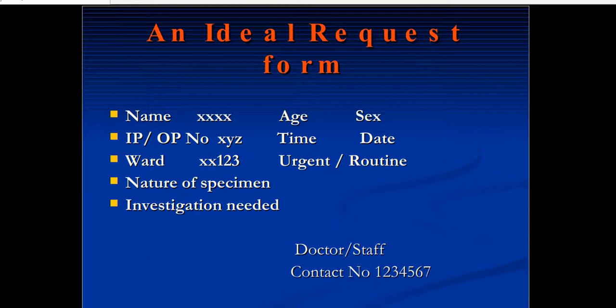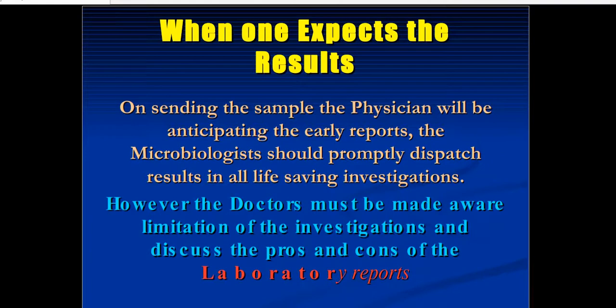An ideal request form should contain all this information. The request form should contain the name of the patient, age, sex with proper number, IP number if inpatient or OP number if outpatient, what time the request was ordered, the date the request was sent to the lab, from which ward the sample was sent, whether it is an urgent or routine test, the nature of the specimen — urine, blood, or other fluid — the investigation needed clearly written, and the doctor or nursing staff's signature along with contact number.